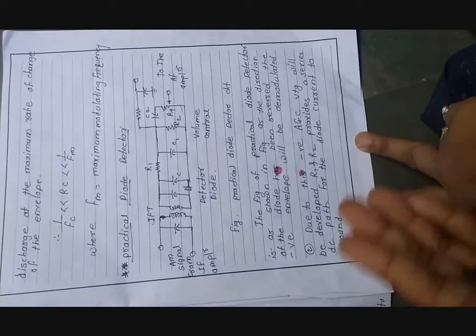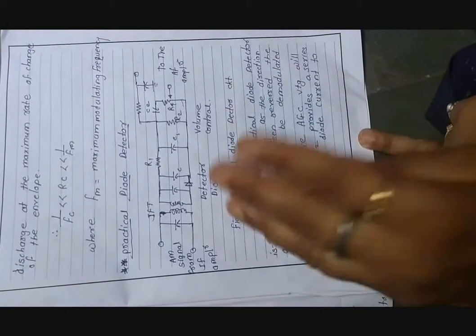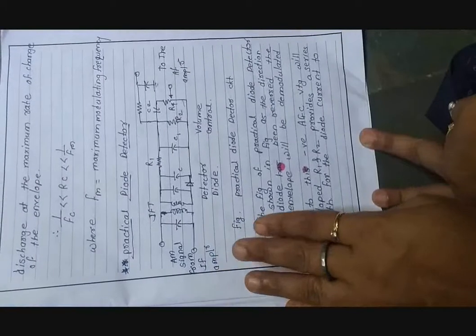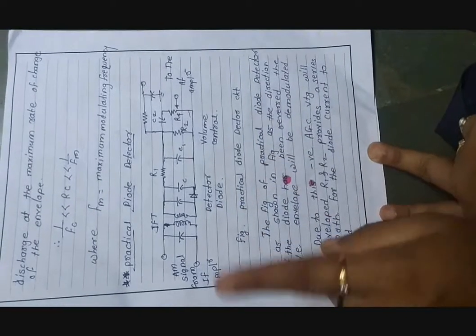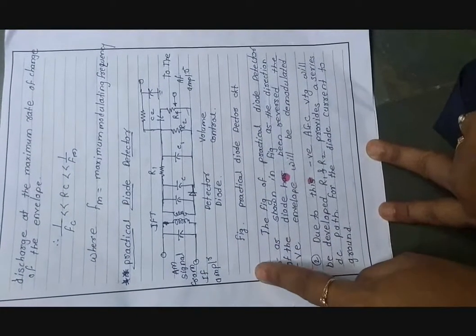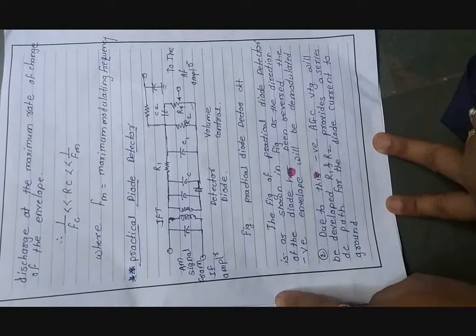In the circuit diagram, the diode is reverse biased, so the negative envelope will be demodulated. We observed earlier that the envelope detector is totally related to demodulation of the positive half cycle only. The practical diode detector is another type related to demodulation of the AM signal for the negative half cycle only. Because the diode is reverse biased, the negative envelope is demodulated.